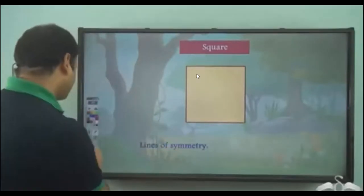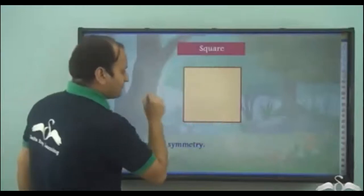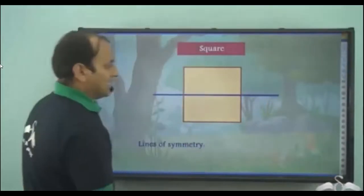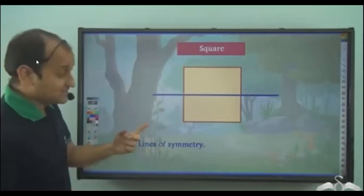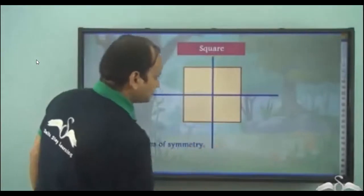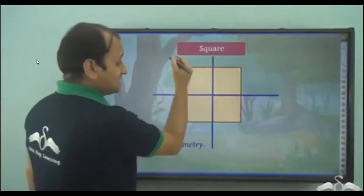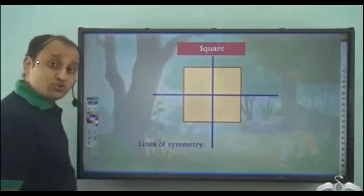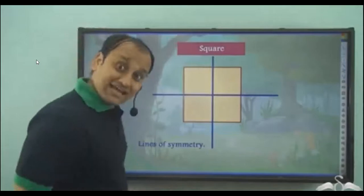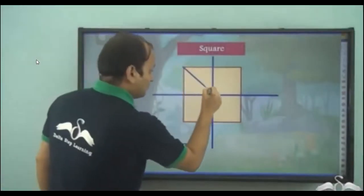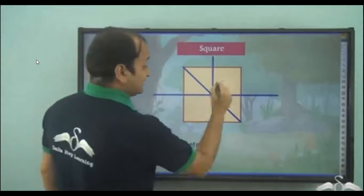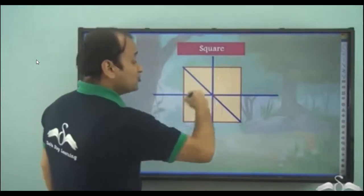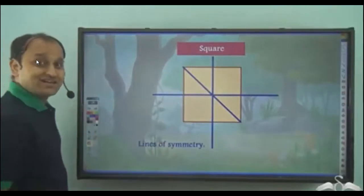Here we have a square. Does it have a line of symmetry? If I draw a line here, I get two halves which are mirror images of each other — that's one line of symmetry. This line also divides the square into two mirror halves — that's the second line of symmetry. And this line also divides it into two mirror halves — that's the third line of symmetry.